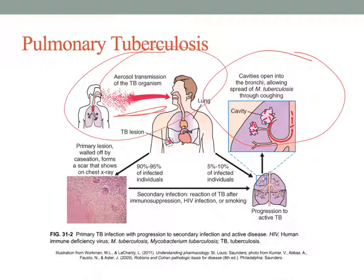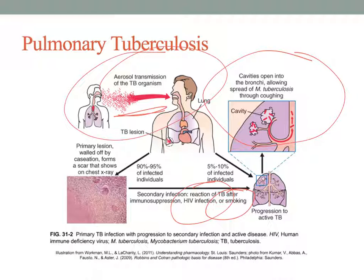However, some people do develop active TB, usually those who are immunosuppressed. HIV patients are at high risk for active TB, as are patients with pulmonary disease associated with smoking.